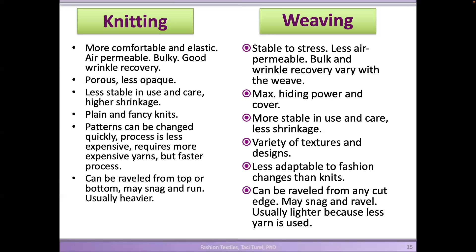With woven fabrics, it requires a lot of preparation — you can't easily just change a pattern on the weaving machine because you have to go through the preparation steps. So it's less adaptable to fast fashion. Knit fabrics can be raveled from top or bottom and may snag or run, while woven fabrics can be unraveled from any cut edge. To unravel a knit fabric, you have to find the top and start pulling the loops out from one direction.